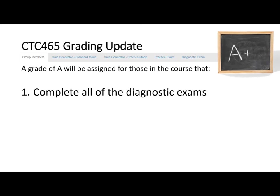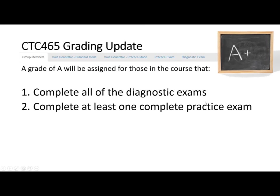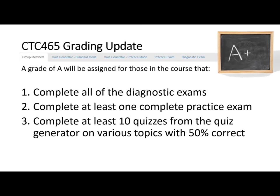Hopefully you take the diagnostic exams and can see where your weak and strong points are — that'll help inform your studying. To get an A you need to complete all the diagnostic exams. The second requirement is to complete at least one practice exam. If you can sit down in one sitting, do the full six hours or whatever the real exam duration is, and get 70% right, you can get an A or A+. In addition, I want you to complete at least 10 quizzes in quiz generator standard mode on various topics with 50% correct.